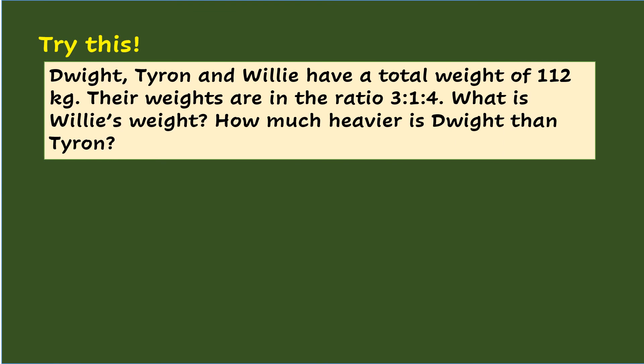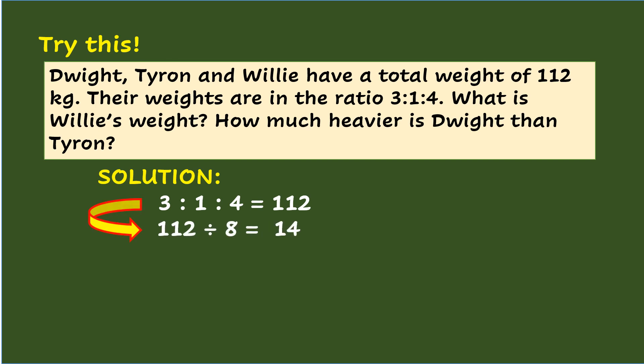Let's try this. Dwight, Tyron, and Willie have a total weight of 112 kilograms. Their weights are in the ratio 3 is to 1 is to 4. What is Willie's weight? The partitive proportion is set up as 3 is to 1 is to 4 equals 112, where 3, 1, and 4 are parts for Dwight, Tyron, and Willie respectively, and 112 is the total weight. Adding 3 plus 1 plus 4 equals 8 parts. Dividing 112 by 8 equals 14. So 14 times 4 parts for Willie equals 56. Therefore, Willie's weight is 56 kilograms.